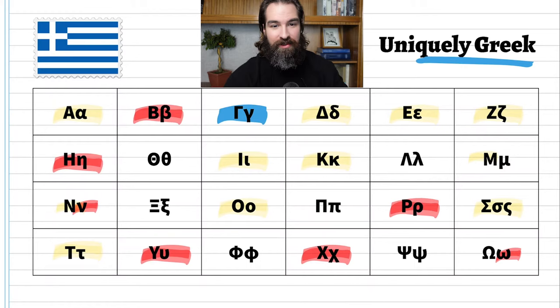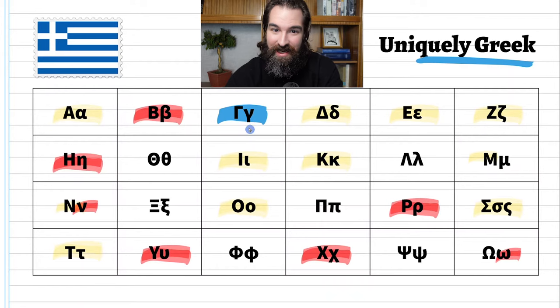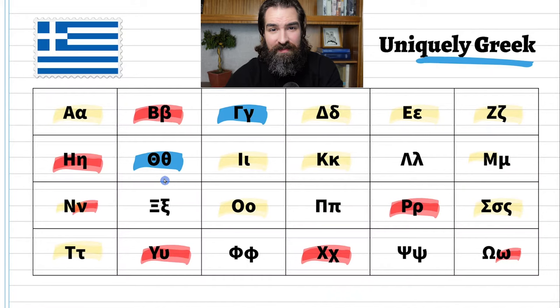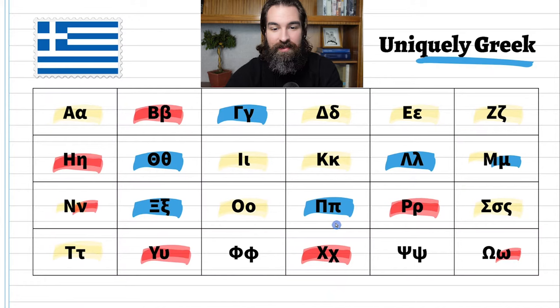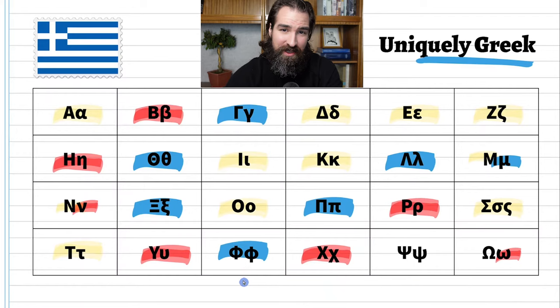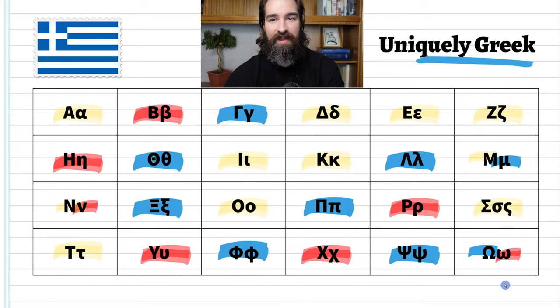Then of course there are some uniquely Greek letters. Gamma — you might have heard of gamma rays. Theta. Lambda, the L sound. The lowercase mu looks a bit different than anything in English. Then there's a squiggly one — xi — which makes an X sound. Pi, which we call pi in math class. Phi — the circle with a line through it. Psi, which looks like Poseidon's trident. And omega, the capital looking like an upside-down horseshoe.